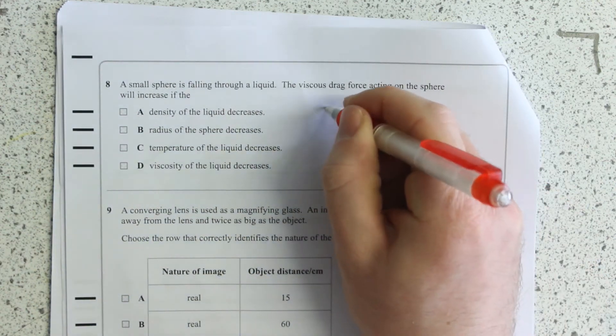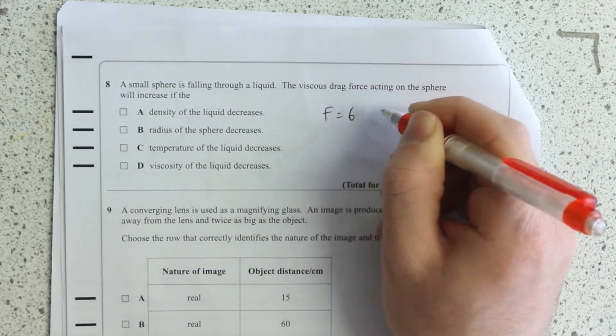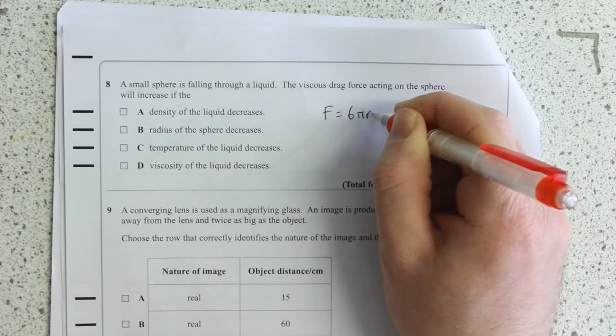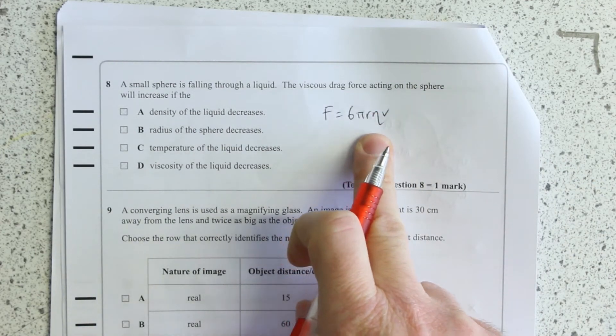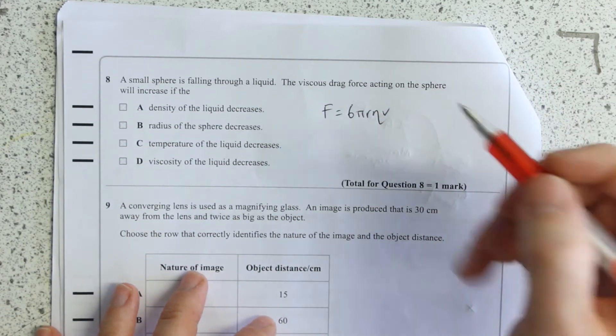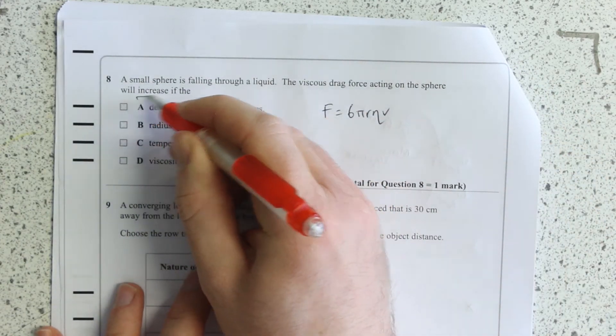So viscous drag force, Stokes force, F equals 6 pi R eta V. Okay, well eta is the coefficient of viscosity. What's going to cause the viscous drag to increase?